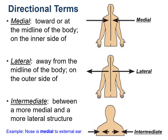The next set includes three directional terms: medial, lateral, and intermediate. Medial means towards the middle or the midline of the body. Lateral means side — a structure that is located away from the midline of the body, towards the side. While intermediate means something in between the medial and the lateral structure. For example, the nose is medial to your external ears, meaning the external ears are lateral to the nose. A structure intermediate between the medial nose and the lateral external ears would be your cheeks.